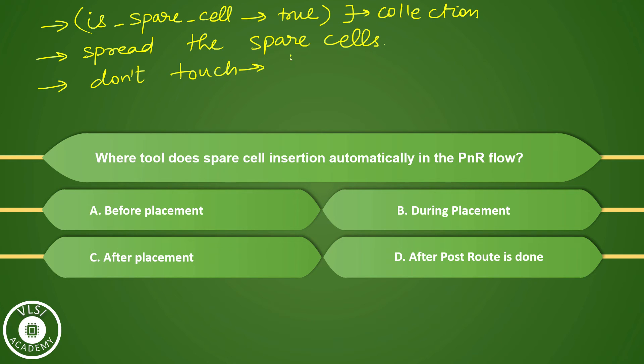After spreading, we will set the don't touch attribute to true on this. So we need to make these cells as don't touch, because if we don't do it, then during the placement optimization or in further stages it is possible that these cells get touched again and we do not want that to happen. So for that we will set as don't touch true, and after that we do the place_opt, or you can say after that we do the placement optimization.